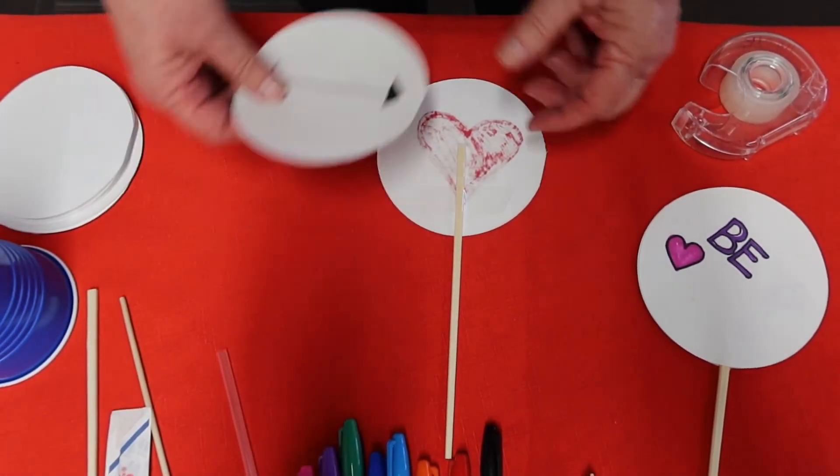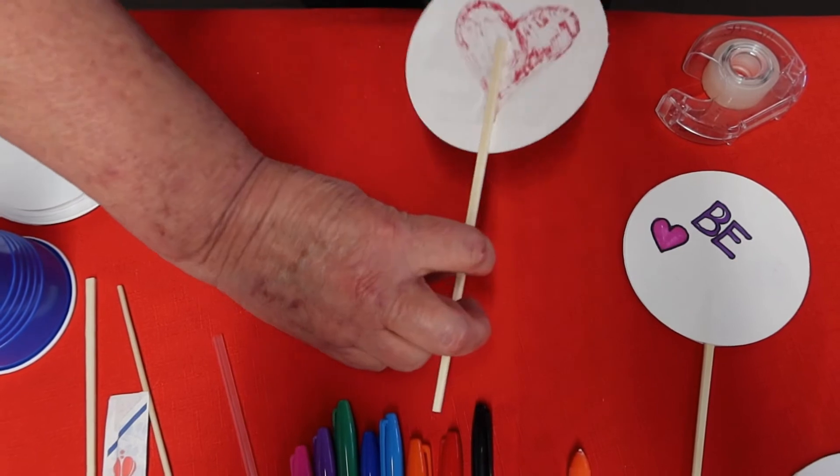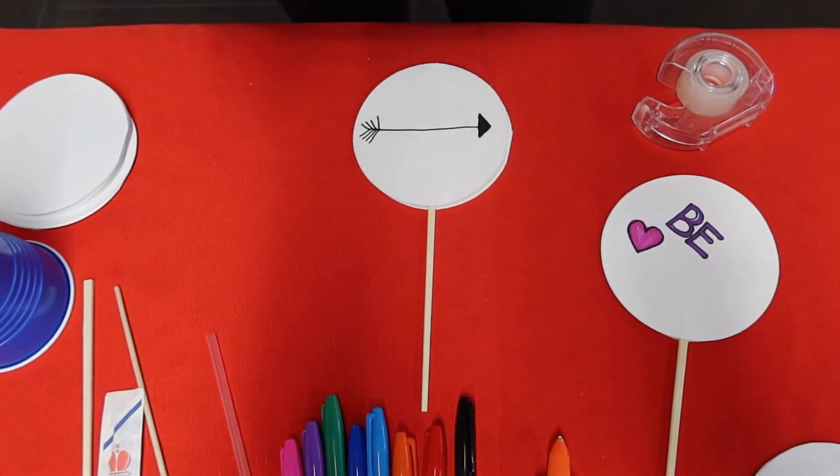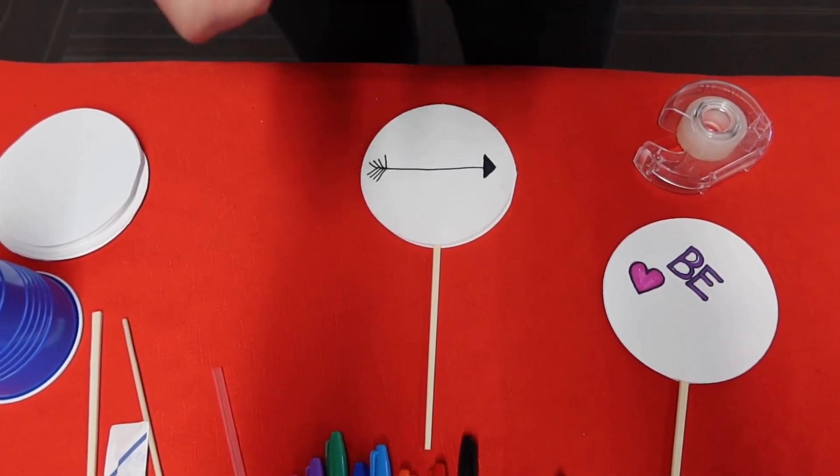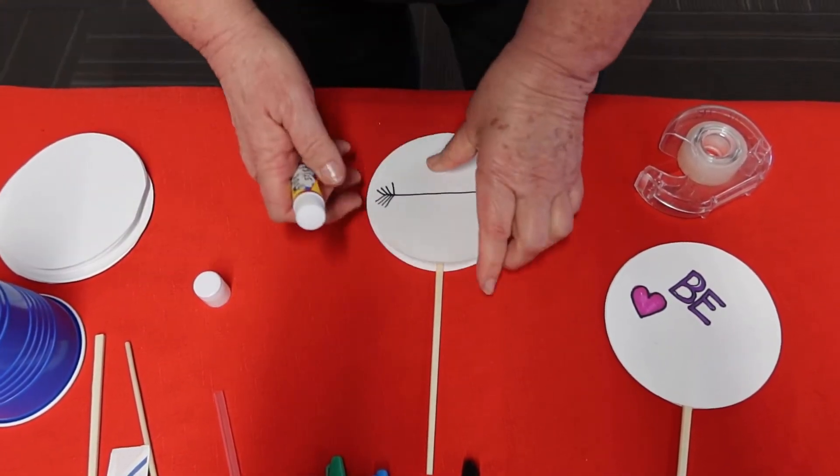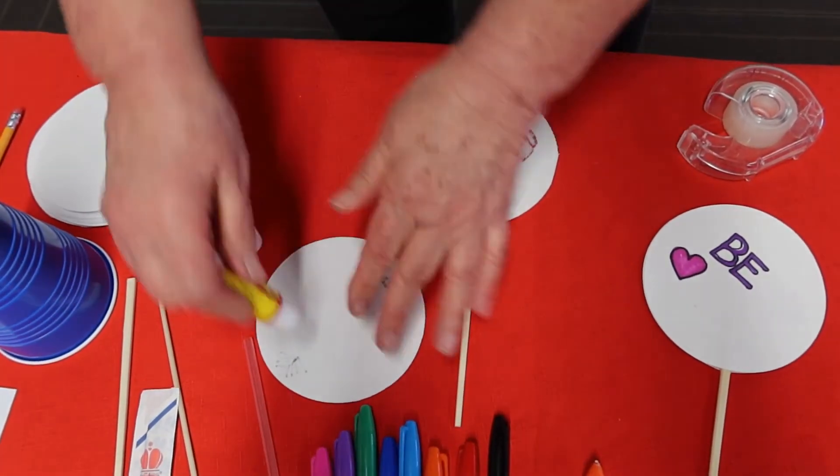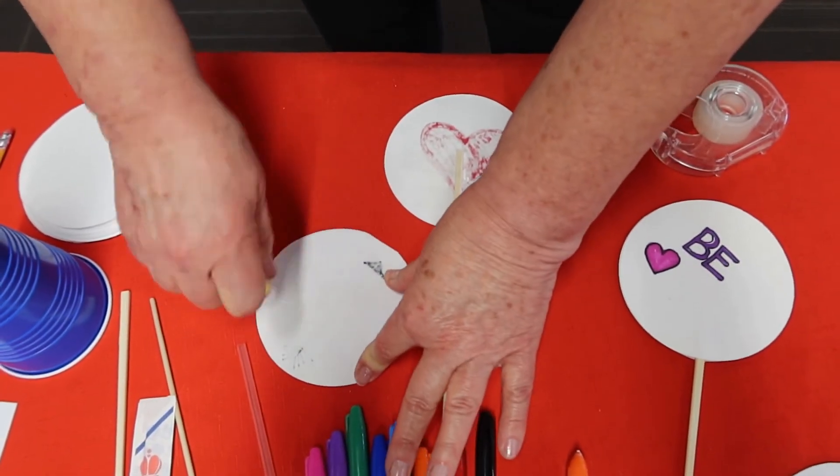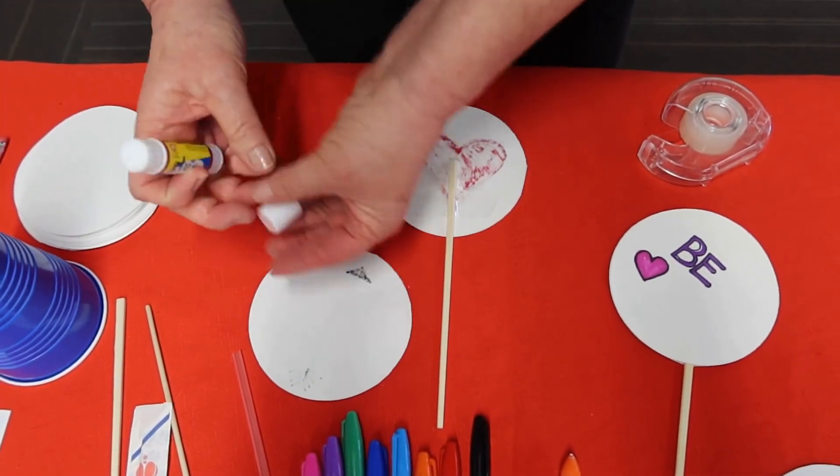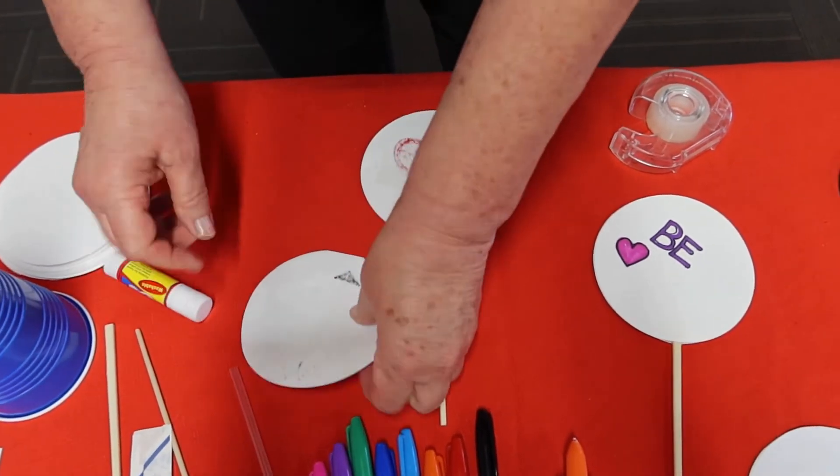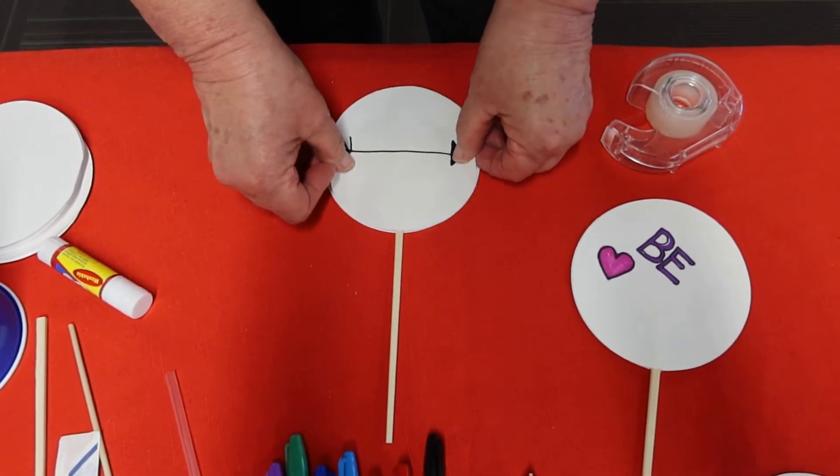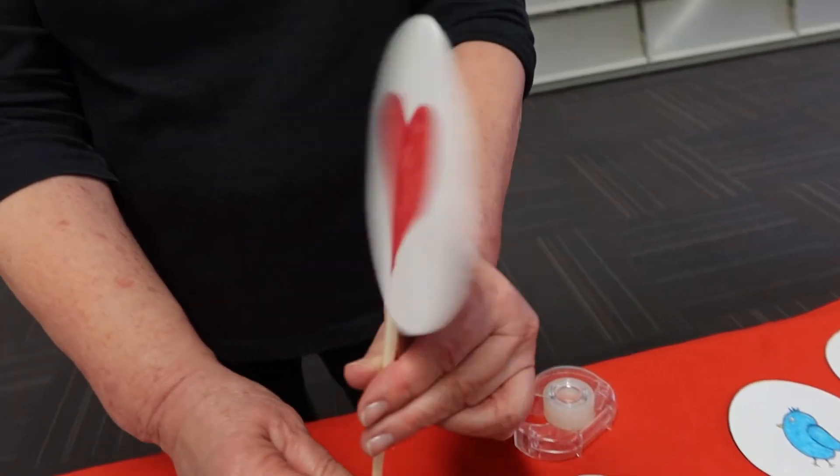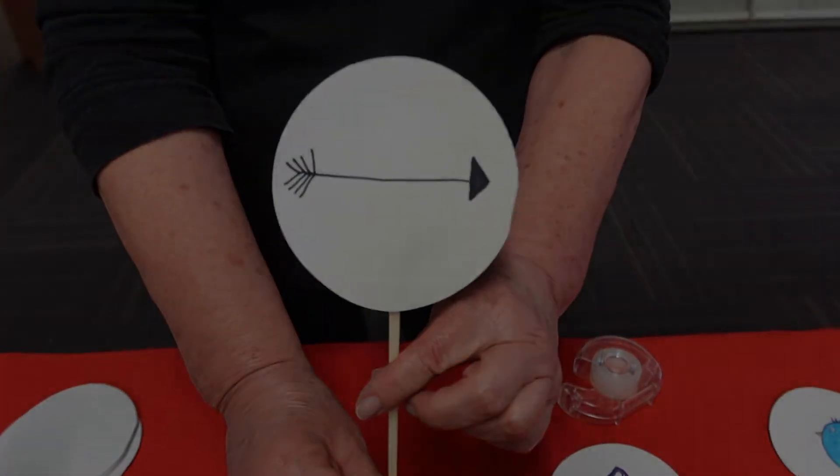To finish your little thaumatrope lollipop, lay the other one over. We can take a glue stick and just glue it down to the other side. Or you could even tape it if that's easier for you. You want to make sure that it lines up properly. And there you have it, your little thaumatrope lollipop.